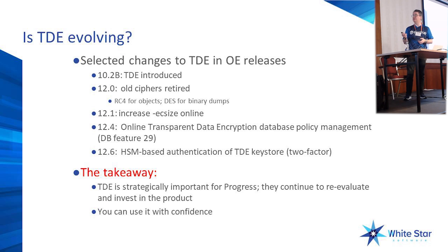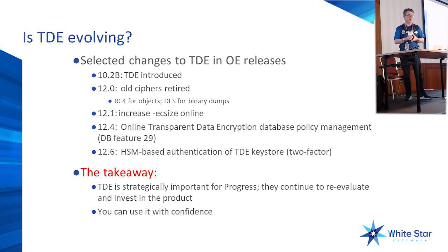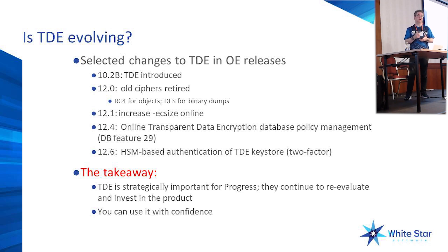One thing I'll call out which I think is even more important than all the features they've added is the features they've taken away. In 12.0, Progress removed the RC4 cipher because it's no longer secure, as well as the DES cipher for binary dumps. What that tells me is that they're continuing to evaluate the real security value that the product provides, and that's just essential for any such product.